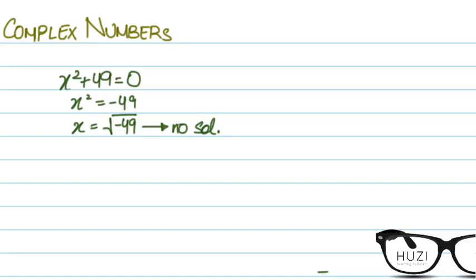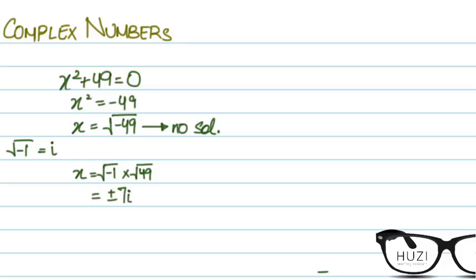Now let's talk about imaginary numbers. There are two types of numbers: real numbers and imaginary numbers. An imaginary number is √(-1), which is denoted by iota, or i. So x = √(-1) × √49, and the solution is simply ±7i.